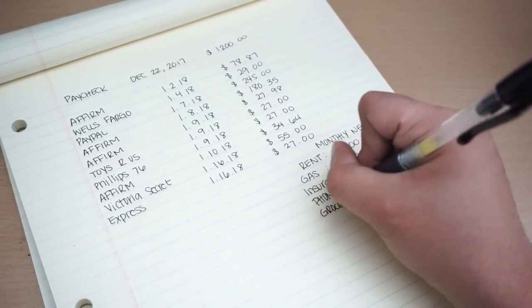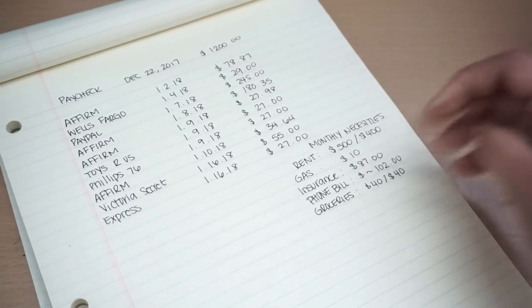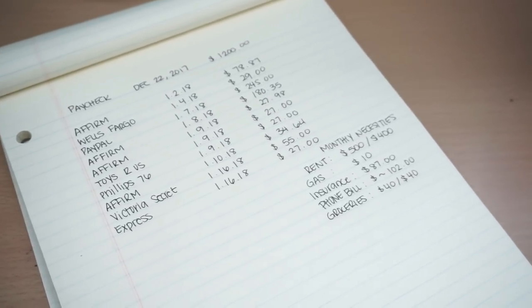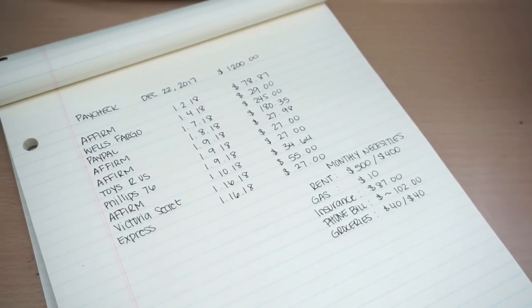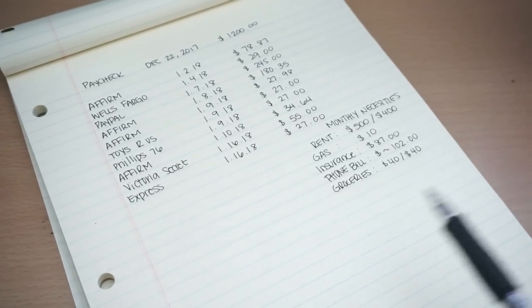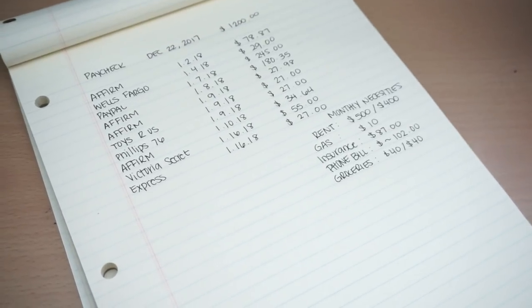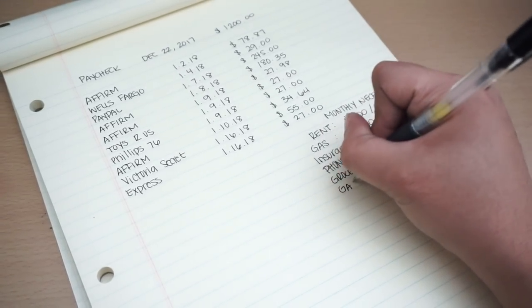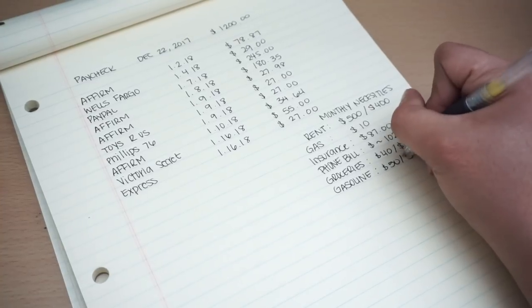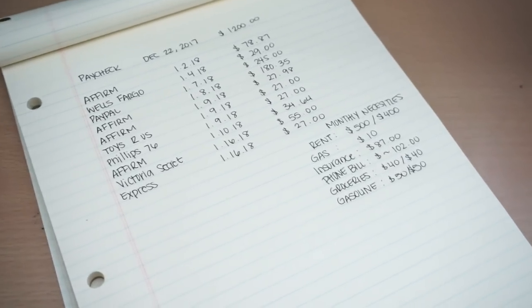For my groceries, I always budget out $80. But I do $40 one week and $40 my next paycheck. Just because me and my boyfriend interchange on our paychecks. When he gets paid, he does groceries. And when I get paid, I do groceries. So that's how that thing works. And so every week we are buying groceries just in little chunks. So we always do a small budget. That's why it's so low. And then for my gasoline, that always stays $50 every paycheck. Because I put $25 each week and I get paid bi-weekly. So yeah, these are my monthly necessities.